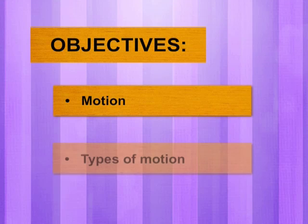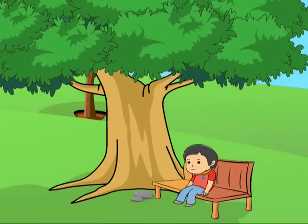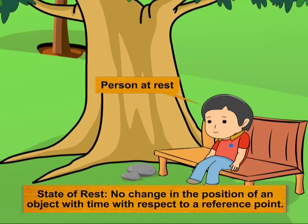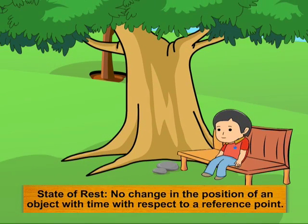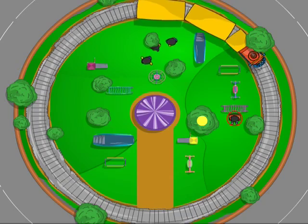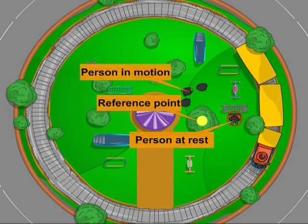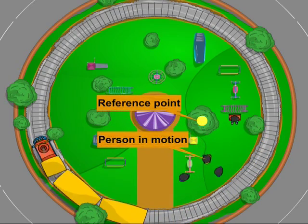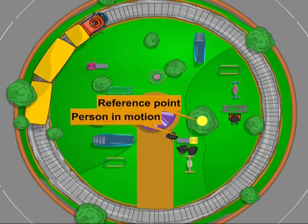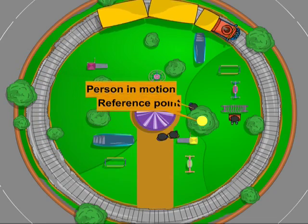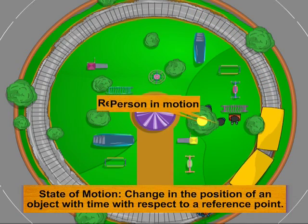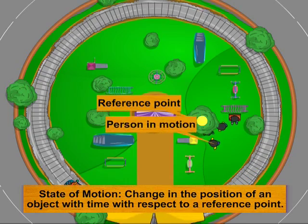Look at this little boy sitting on the bench — he is in a state of rest, as he is not changing his position with respect to this tree. We call the tree here the reference point. But the little children who are running around in the park are obviously changing their positions each instant with respect to the same reference point — the tree. Hence these children are said to be in the state of motion with respect to the reference point.